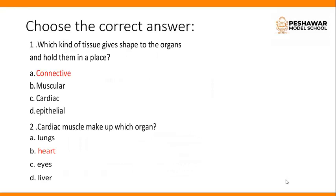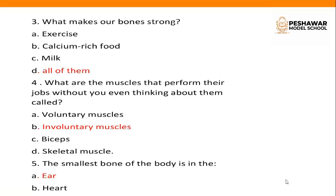Now choose the correct answer. Open your book, come to page number 9. Question 1: which kind of tissue gives shape to the organs and holds them in place? Answer: connective tissue. Question 2: cardiac muscles make up which organ? Answer: heart, option B. Question 3: which makes our bones strong? Exercise, calcium-rich food, milk — the answer is all of them, option D. Question 4: which muscles perform their jobs without you even thinking about them? They are called involuntary muscles, option B. Question 5: the smallest bone of the body is in the ear, option A.